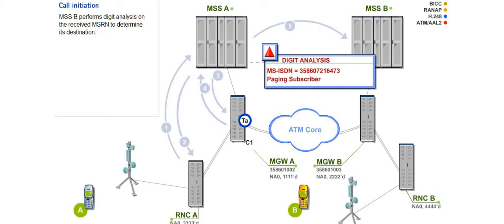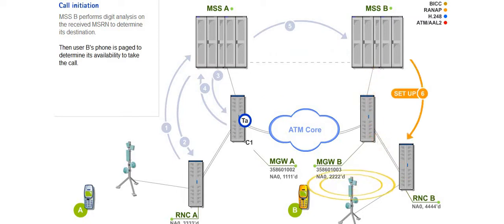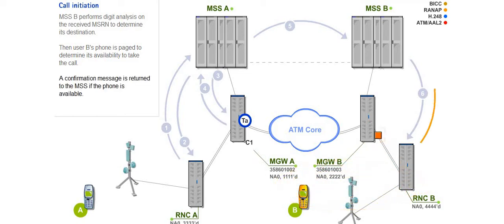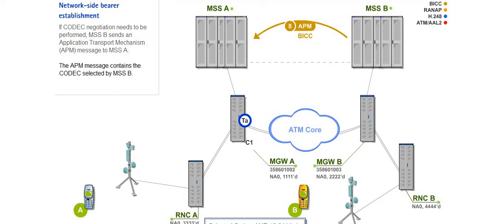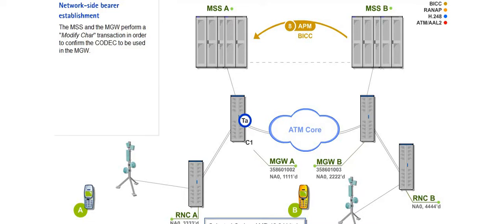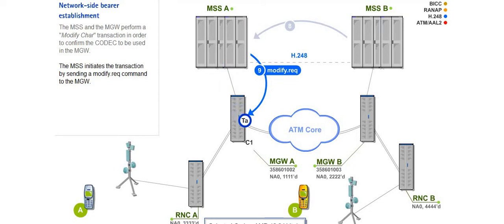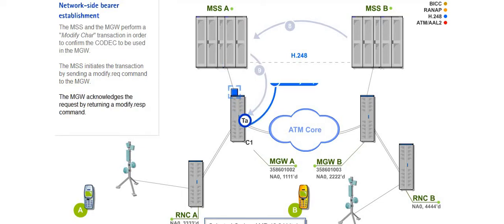MSSB performs digit analysis on the received MSRN to determine its destination. Then user B's phone is paged to determine its availability to take the call. The confirmation message is returned to the MSS if the phone is available. If codec negotiation needs to be performed, MSSB sends an application transport mechanism, or APM, message to MSSA. The APM message contains the codec selected by MSSB. The MSS and the MGW perform a modify characteristics transaction to confirm the codec to be used in the MGW. The MSS initiates the transaction by sending a modify request command to the MGW, and the MGW acknowledges by returning a modify response command.